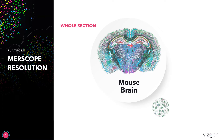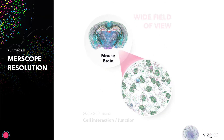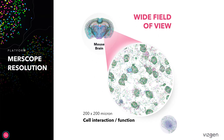Here we can see some examples of how resolution works on the MERScope system. What's really important is that we're seeing this at different scales. You can see the whole section of a mouse brain, and then zoom in to get a wide field of view to see individual cells and how they're neighboring and interacting with each other to understand the function of those individual cells.